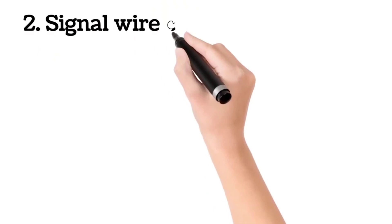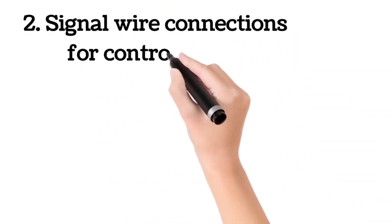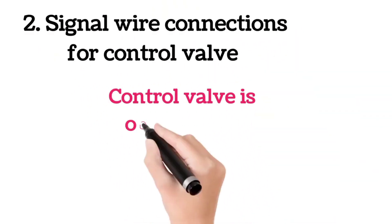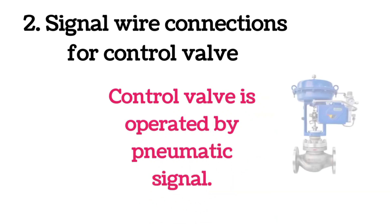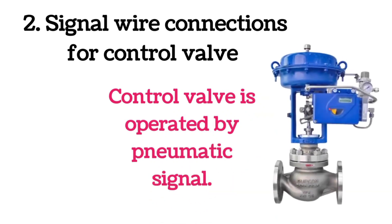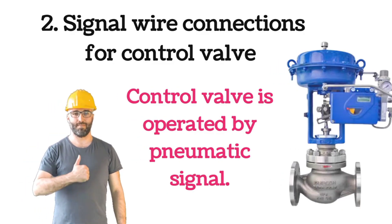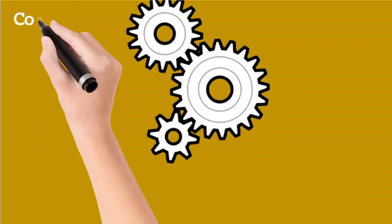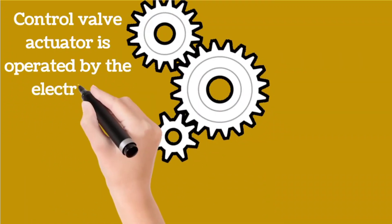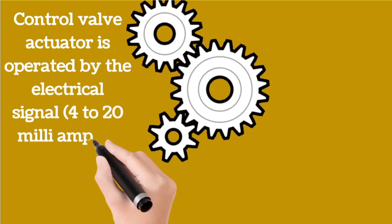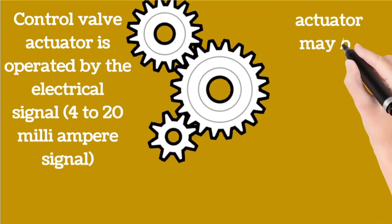Now we will discuss signal wire connections for a control valve. A control valve was originally operated by a pneumatic signal or air signal. But the control valve actuator is operated by an electrical signal, and this signal is usually a 4 to 20 milliampere signal.